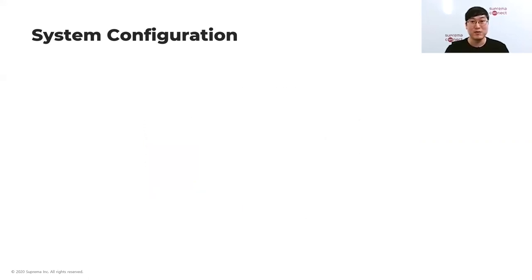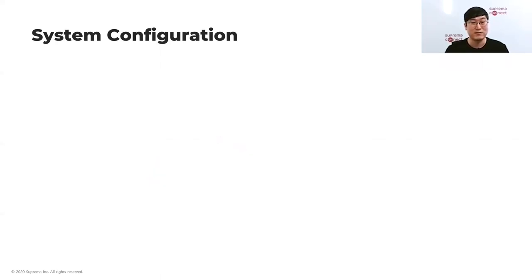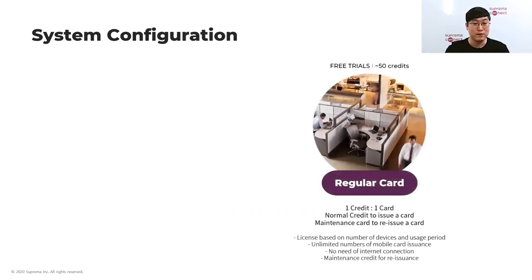For face recognition readers, FaceStation 2 and FaceLite support mobile access. Our latest face recognition reader FaceStation F2 also supports mobile access. Moving on to licensing — we have two types of licenses: one based on the number of users and one based on the number of devices. You can select the card type accordingly.